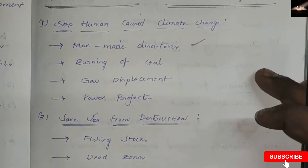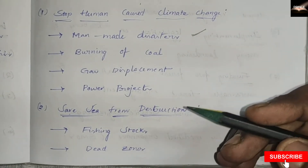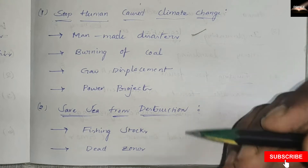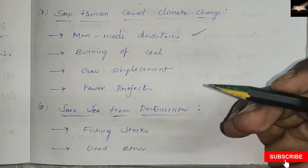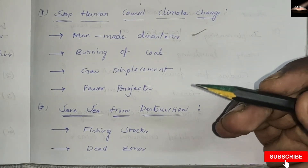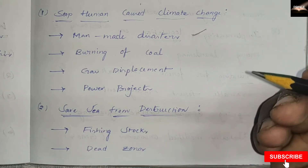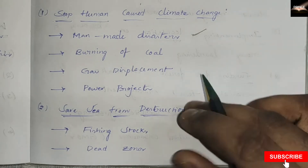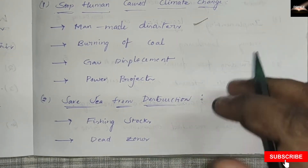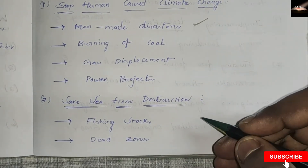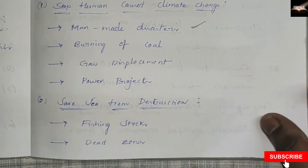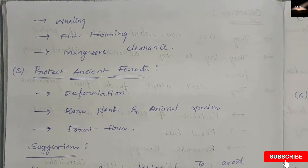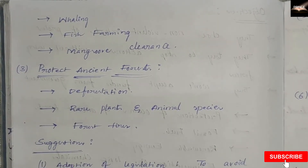Greenpeace works to save seas from destruction. Our oceans cover two-thirds of the planet and host 80% of all life, from microscopic plankton to the greatest whales. In this area, they cover issues such as fishing stocks, dead zones, whaling, fish farming, and mangrove clearance.